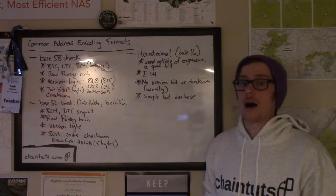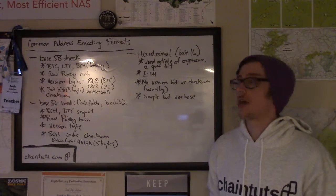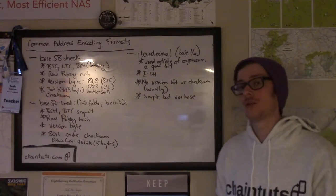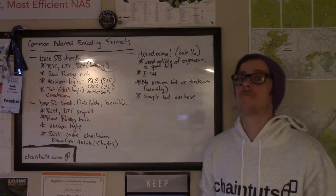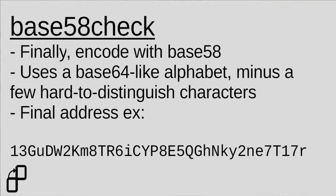Once you have the final raw address that has the version byte, the raw public key hash, and the SHA-256 checksum, you run that through a Base58 encoding. Base58 is a number system, kind of just like base 10 is. In our day-to-day lives, we're used to doing math with numbers that have zero through nine as the digits. Well, Base58 uses one through nine and a number of alphanumeric characters as well, both capital and lowercase.